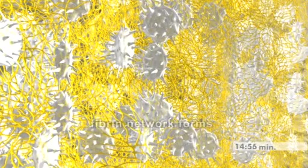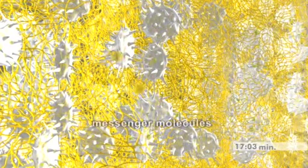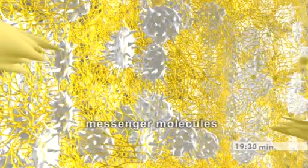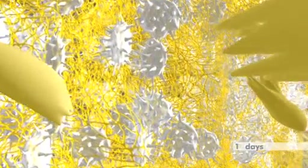A dense fibrin network forms, resulting in a blood clot. Messenger molecules are released from the blood clot. These molecules attract mesenchymal cells and thereby initiate the bone formation process.